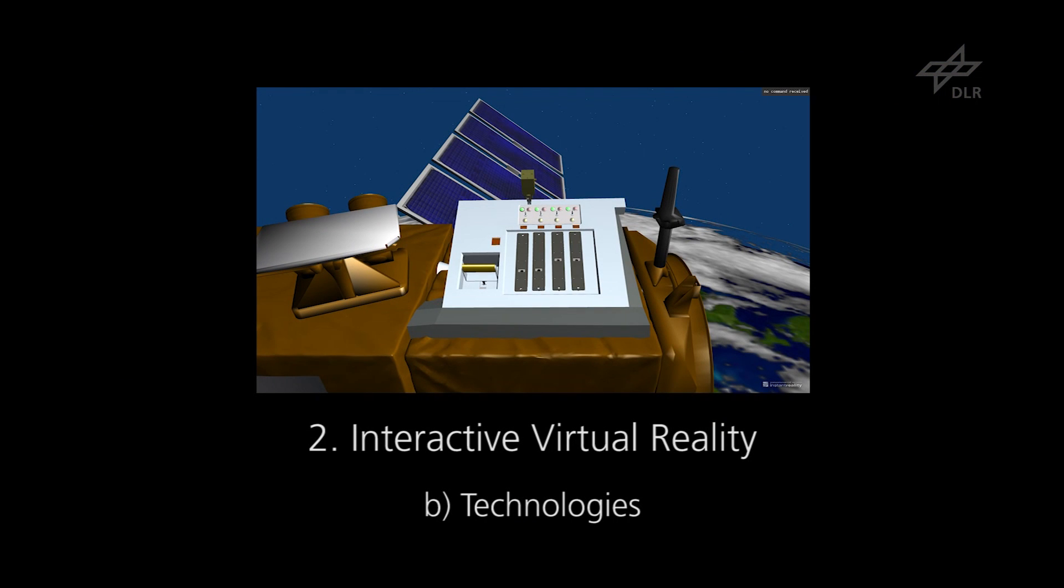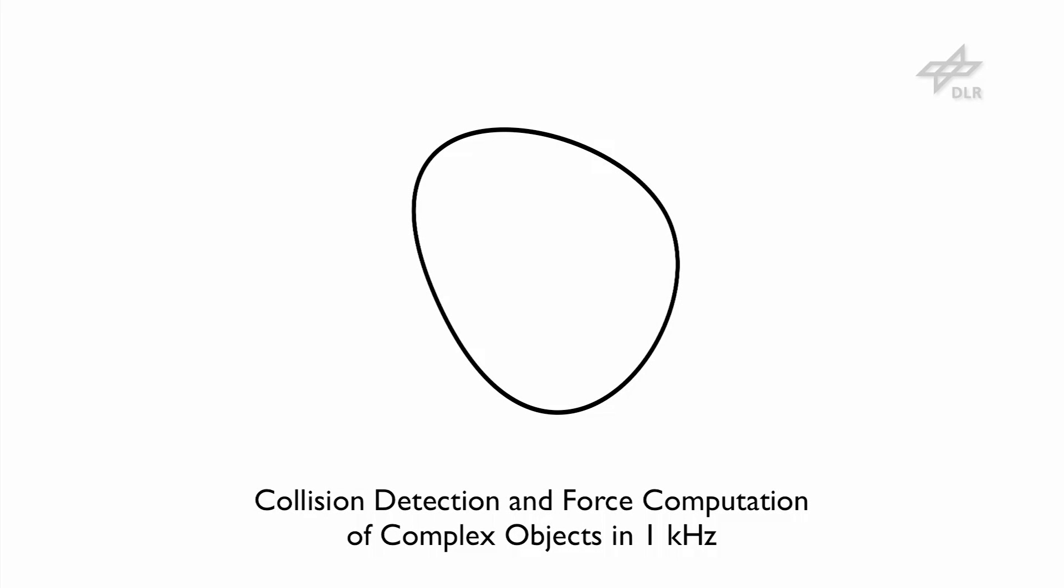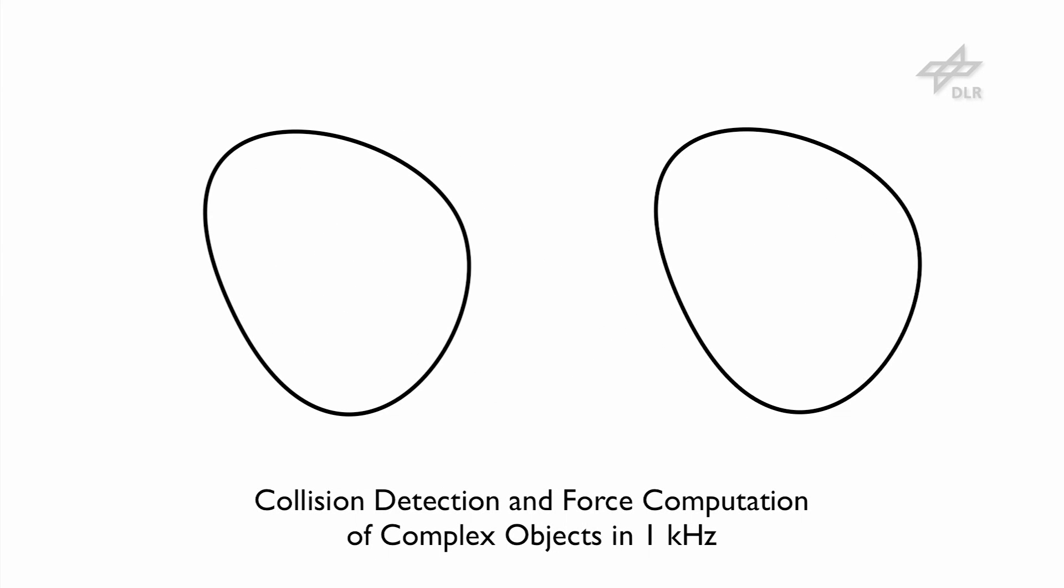A collision detection algorithm based on the voxel map point shell algorithm is used. The voxel map point shell algorithm is able to perform with 1 kHz update rate and works with two data structures.